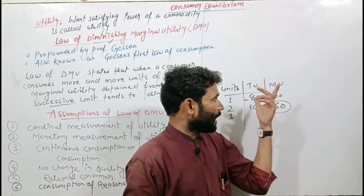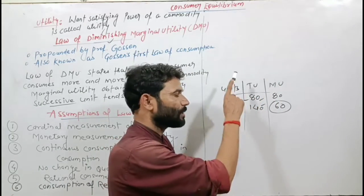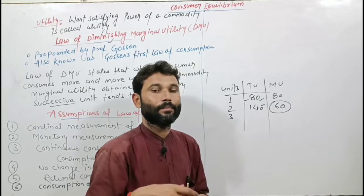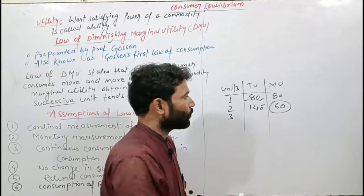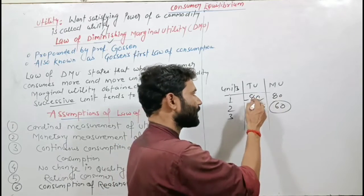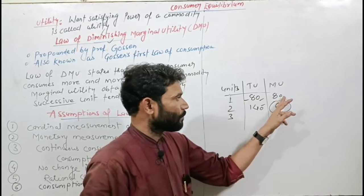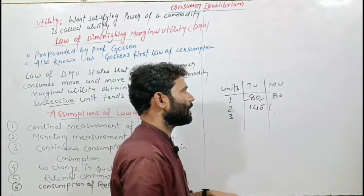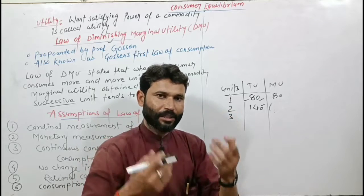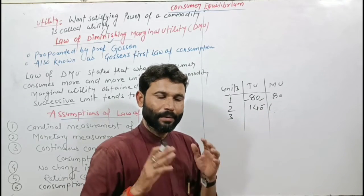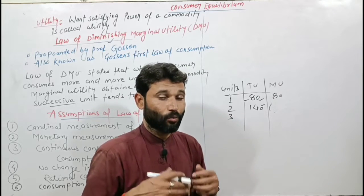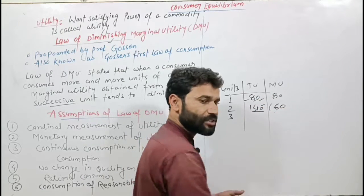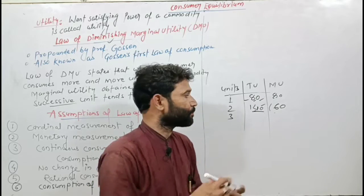Let's understand this with a table. The first column shows units, the second column shows total utility (total satisfaction), and the third column shows marginal utility. When we consumed the first unit, total utility was 80 utils. After the second unit, total utility increased to 140 utils. To find the second unit's marginal utility, we subtract: 140 minus 80 equals 60 utils.